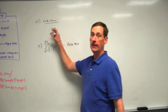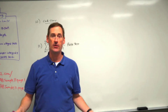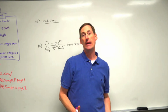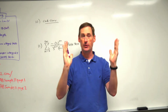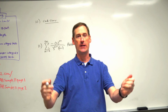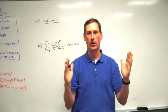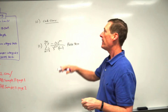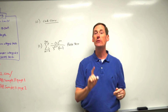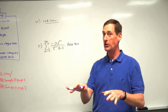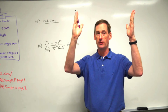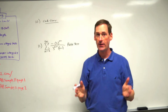Now we have conditionally convergent — the opposite of absolutely convergent. If something is absolutely convergent, it is strongly convergent and it converges with the absolute value bars on it. If something is conditionally convergent, it is only convergent under certain conditions, but when you put the absolute value bars around it, it doesn't work.